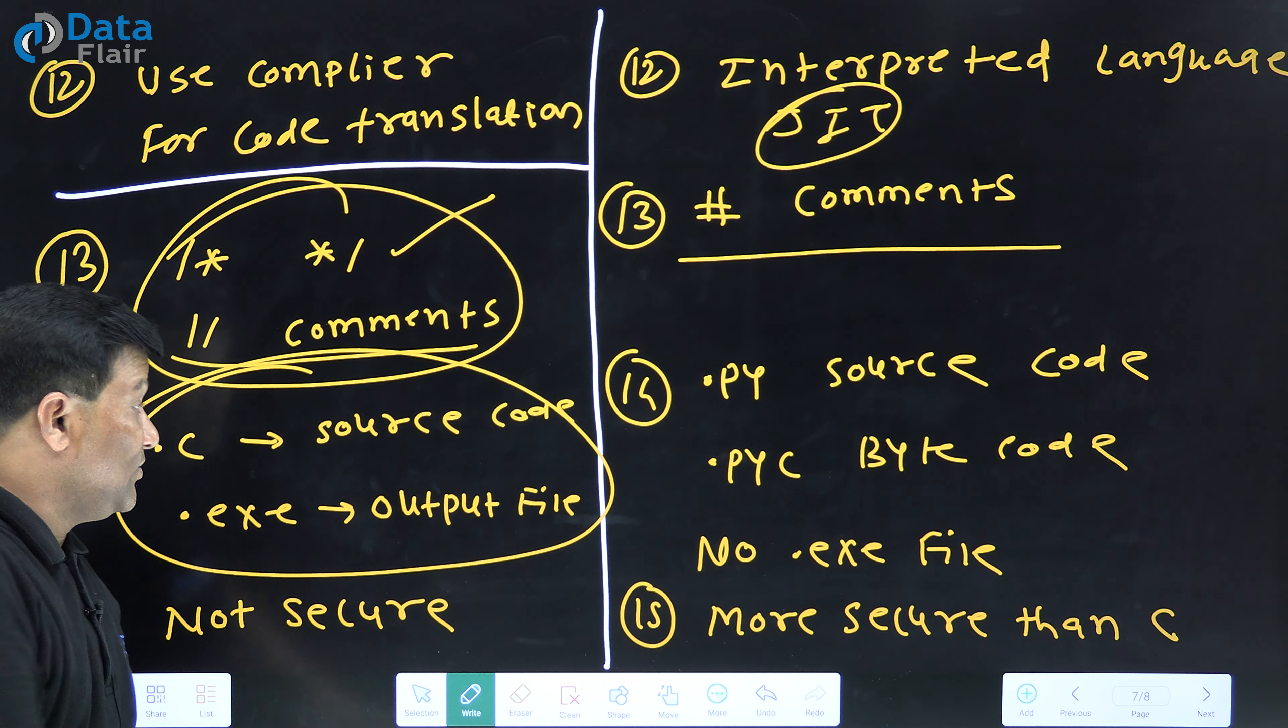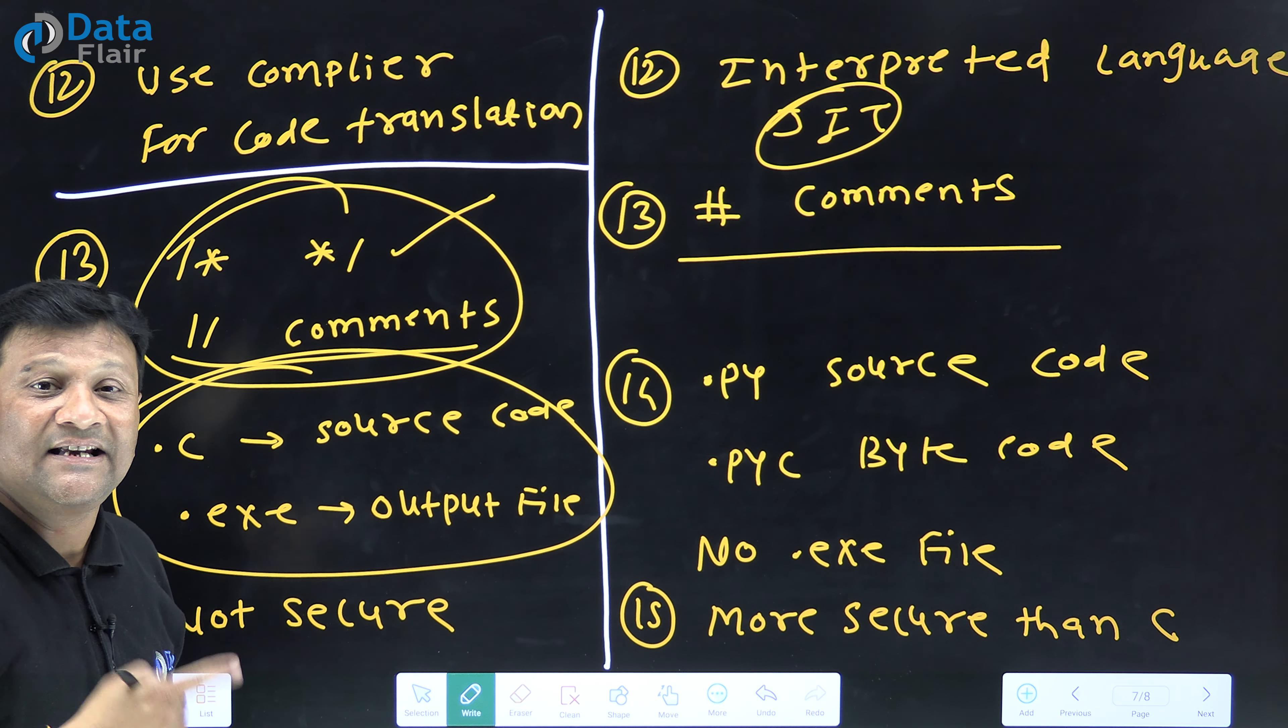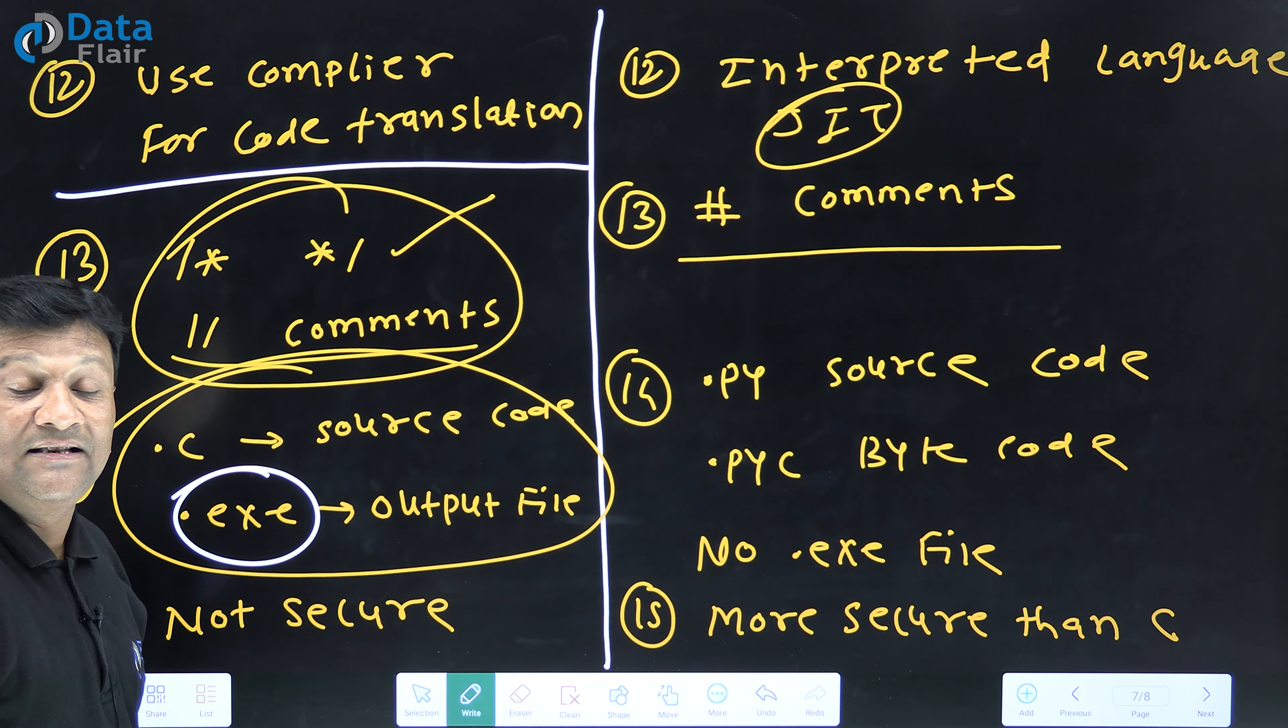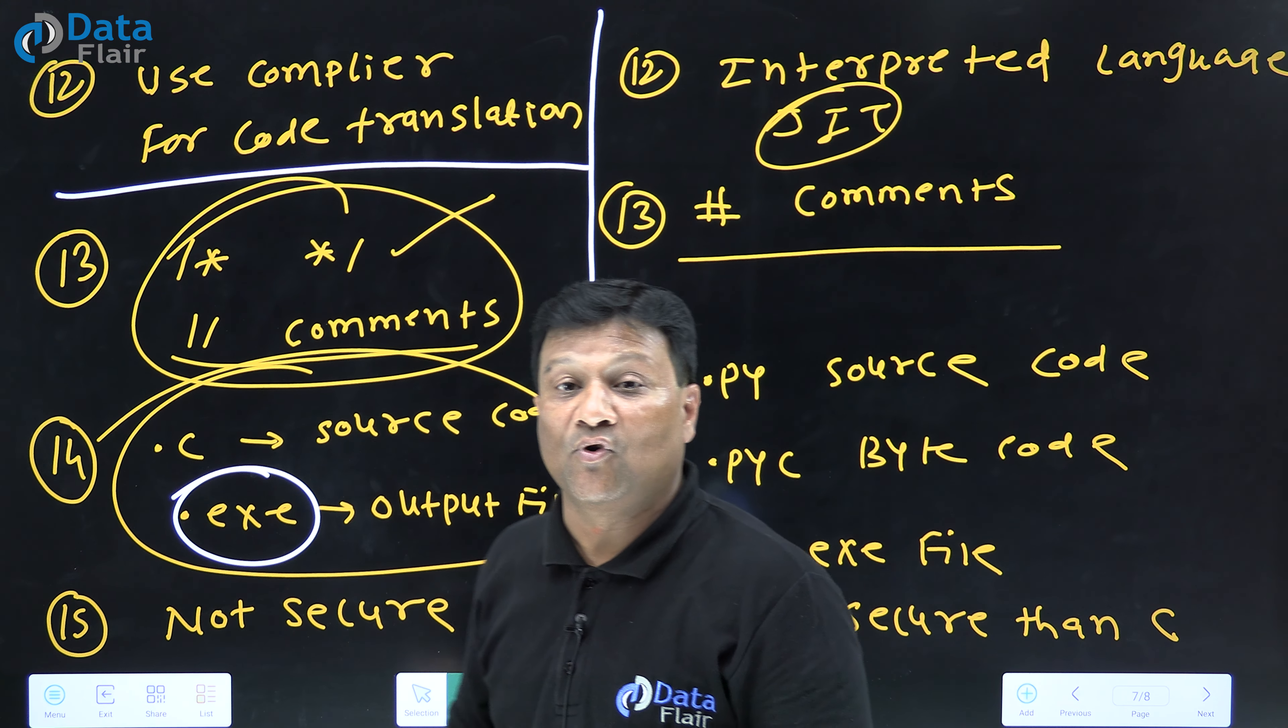Another most important difference. The source code of C uses .c extension and after compilation, when the C program stores the output, that is a .exe file.